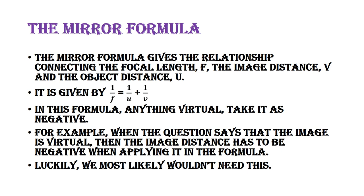After getting V, use M = V/U to get M, then use M = IH/OH to get image height. In this formula, anything virtual takes a negative sign. If you get a negative value for V, that means the image is virtual. You don't need to worry — if V comes out negative, that simply indicates a virtual image.